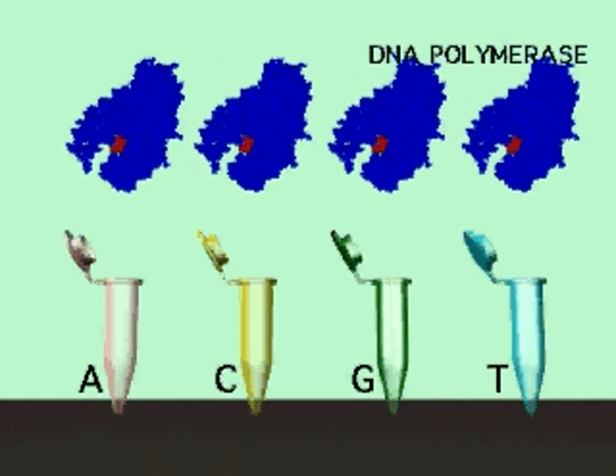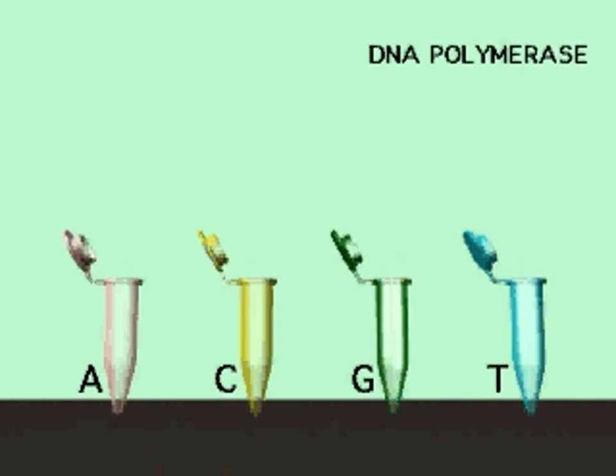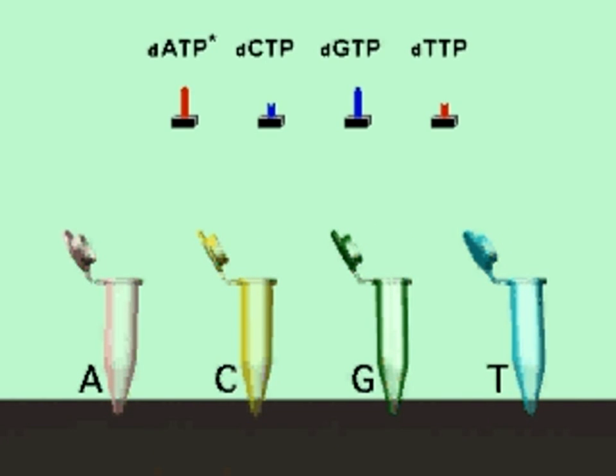DNA polymerase is added to catalyze the synthesis of DNA, and deoxynucleoside triphosphates are added as substrates. DATP is labeled with either the radioisotope S35 or P32 to facilitate visualization of the newly synthesized DNA.